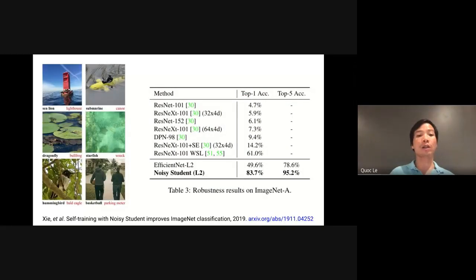First, on the ImageNet-A test set, the images are naturally-looking difficult images. A ResNet classifier gets a very low accuracy of 4.7% top-1. Although you can achieve 61% by pre-training on Instagram, noisy student gets 83.7%, which is much better than the previous state-of-the-art and closes the gap to normal ImageNet accuracy.